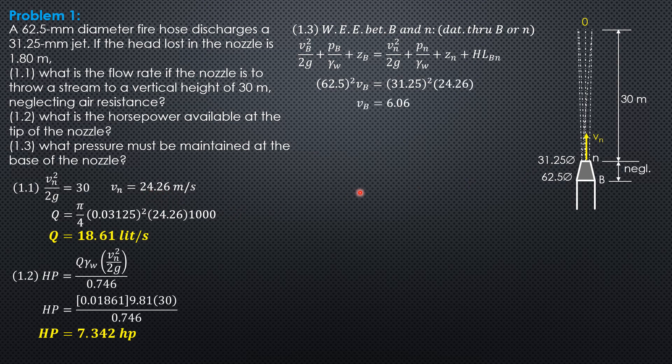V sub B is 6.065 meters per second. This value squared divided by 19.62 gives the velocity head at the base of the nozzle, 1.875 meters.